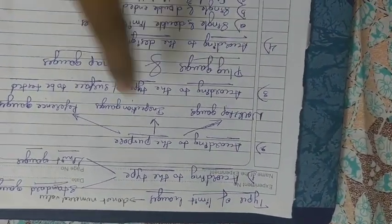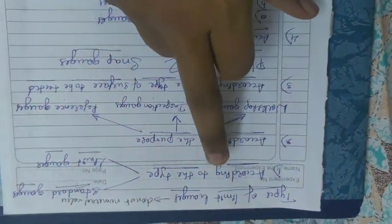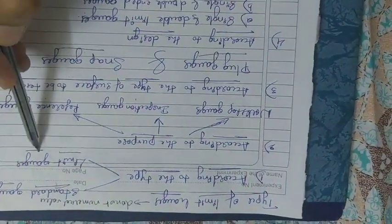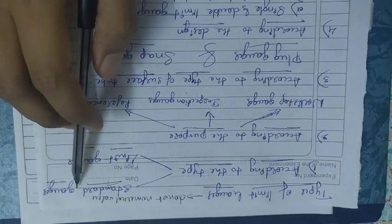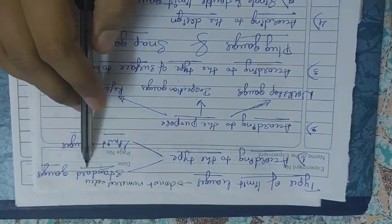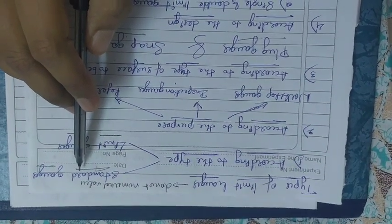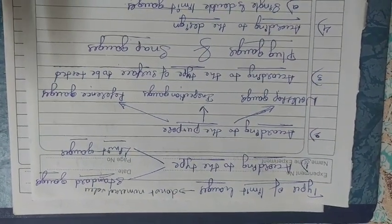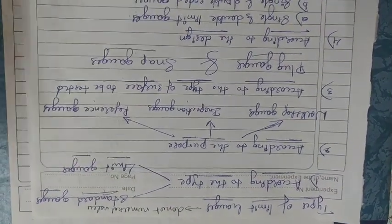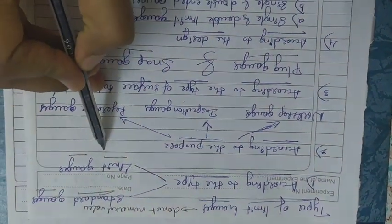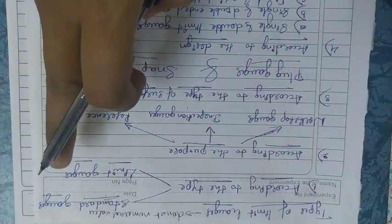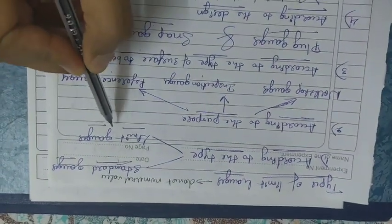In this video I will explain the types of limit gauges. In the previous video I elaborated the different types. According to type, we have standard gauges and limit gauges. Standard gauges are made as an exact copy of the dimensions to be checked. Because they are an exact copy, they are not usable for other dimensions. Limit gauges, on the other hand, are manufactured according to the limits of the dimensions of the components to be tested.